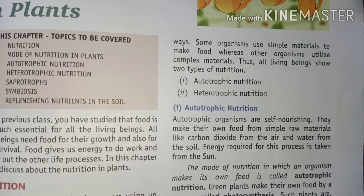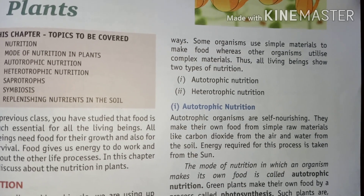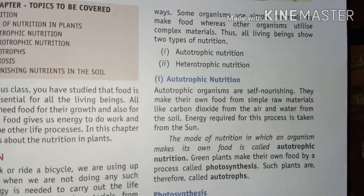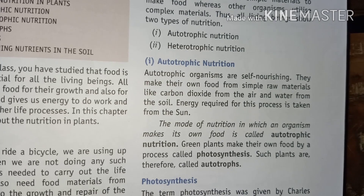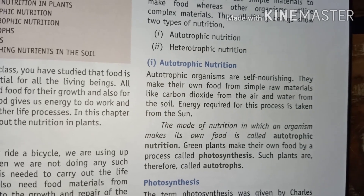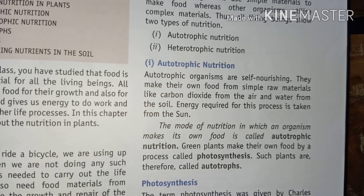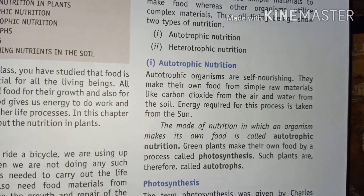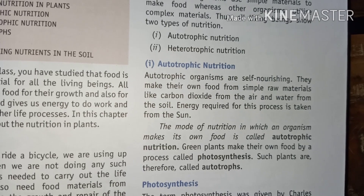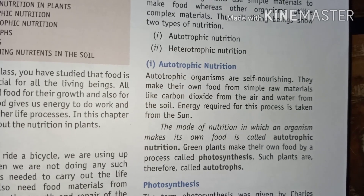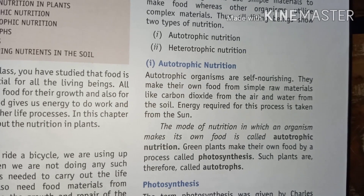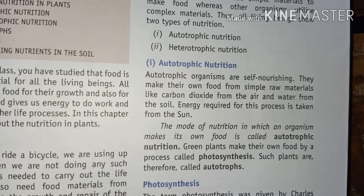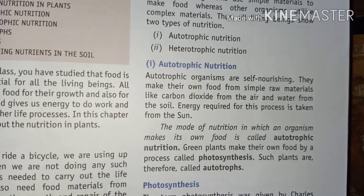Now let us understand what autotrophic nutrition is. Autotrophic organisms are self-nourishing. They make their own food from simple raw materials like carbon dioxide from the air and water from the soil. The energy required for this process is taken from the sun.